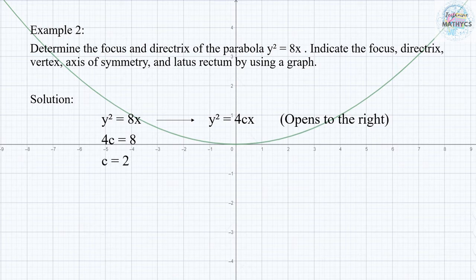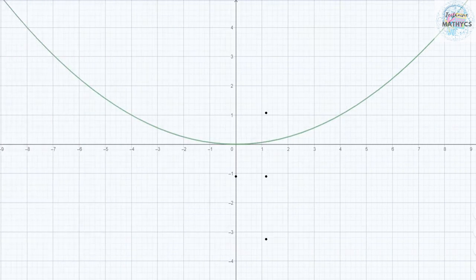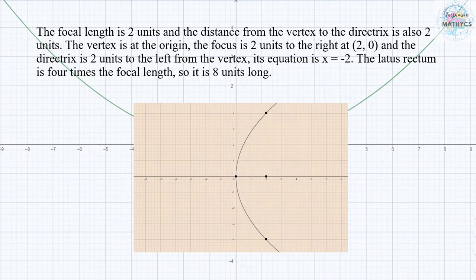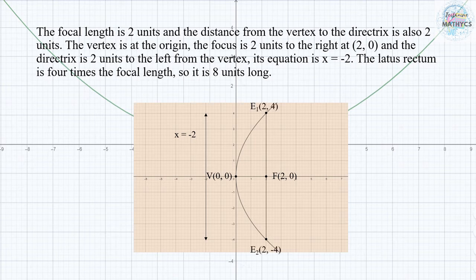The focal length is 2 units and the distance from the vertex to the directrix is also 2 units. The vertex is at the origin, the focus is 2 units to the right at (2, 0), and the directrix is 2 units to the left from the vertex, so its equation is x equals negative 2. The latus rectum is 4 times the focal length, so it is 8 units long.